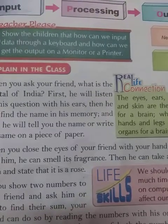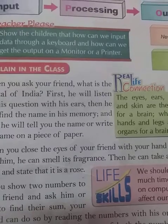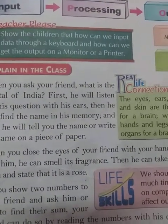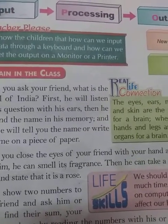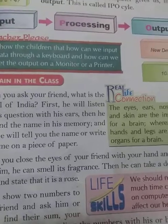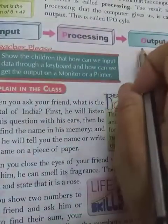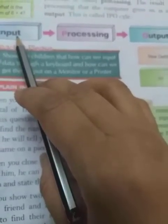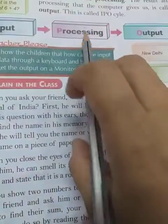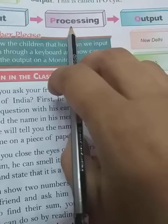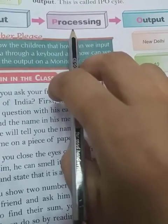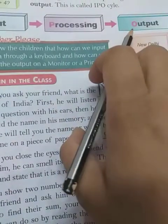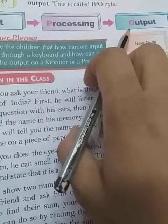Good afternoon students, I hope you all are well. Yesterday we studied about input, processing, and output. Input is when the information is given to the computer to work. The task that the computer performs is called processing. After that, the result that the computer gives us is called output.